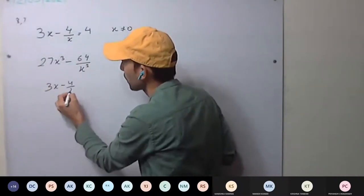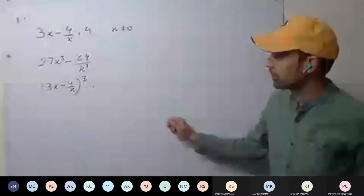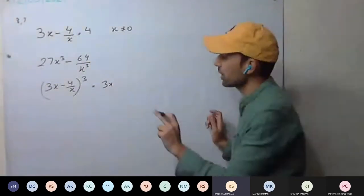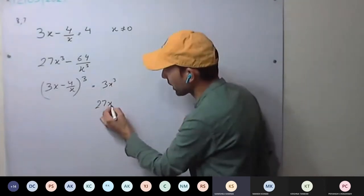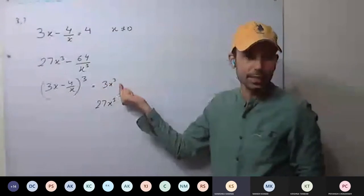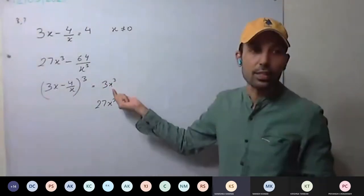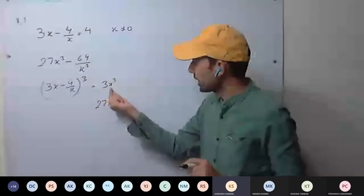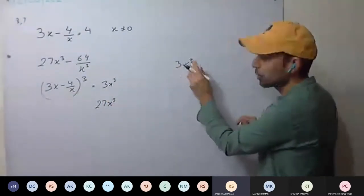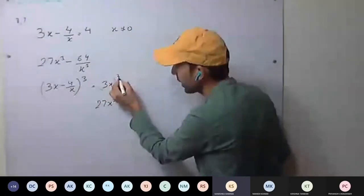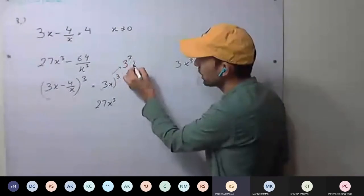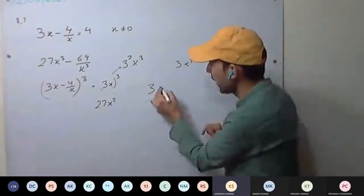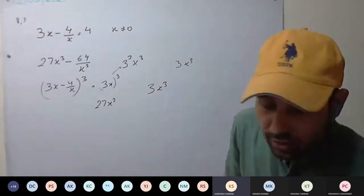So 3x minus 4 upon x, the whole cube. I have seen some students making mistakes. You are writing it like this and in the next step writing 27x cubed — that is correct. But here you have made one mistake. You are writing it wrong — it means 3 into only the cube of x. How you have to write: make the brackets, then cube. Or you can write 3 cubed x cubed. Either write 3x the whole cube. Don't write 3x cube — it means just the cube is of x, not of 3.